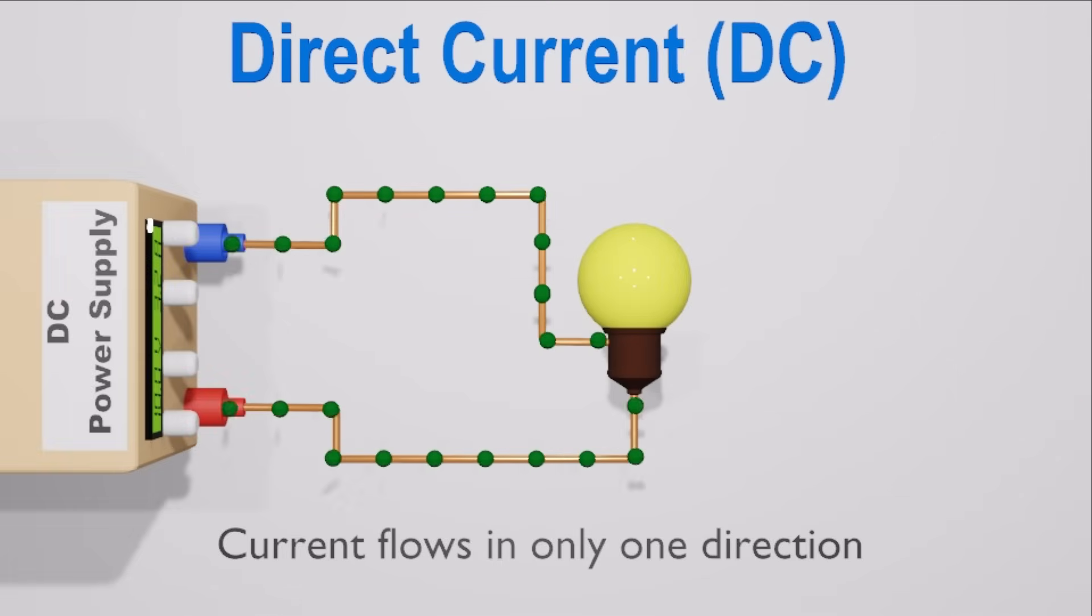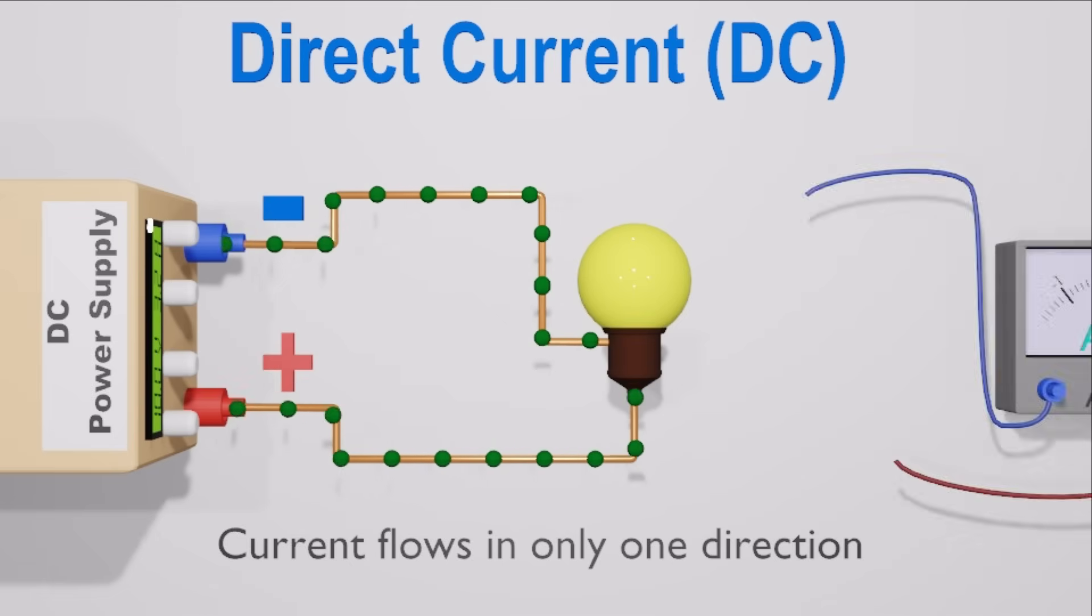Let's start with direct current. DC is a linear type of electrical current. Direct current always only flows in one direction, from positive pole to negative pole. Keep in mind that the electrons flow opposite to that. For DC, the positive and negative poles always remain the same.